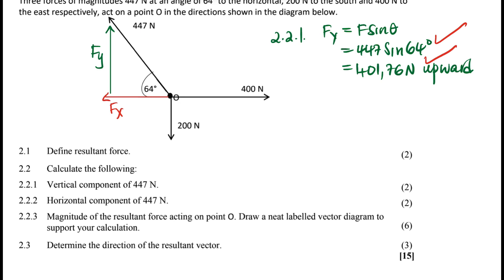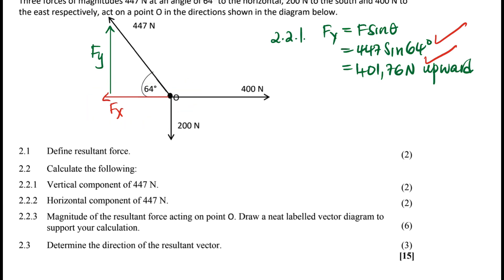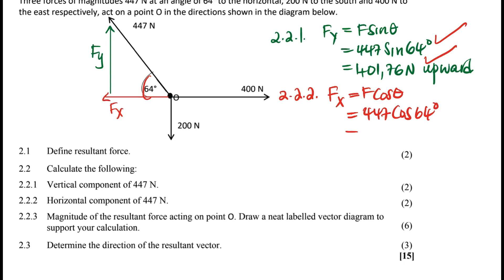Question 2.2.2 asks for the horizontal component of the 447 N force. The formula is FX = F cos θ, so it's 447 cos 64°. Punch that into the calculator and the answer is 195.95 N. The direction is pointing to the left. We're done with those two questions.